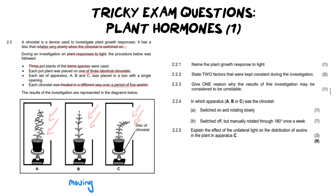On the other hand, which one is the clinostat that is not moving at all? We are testing for the response to light, and one of these is responding to the light only. I know already that C is going to be the one that is not moving at all. We can see in the picture it's bending over towards the light. That's because the auxins are collecting on the dark side, causing cell elongation and bending towards the light.